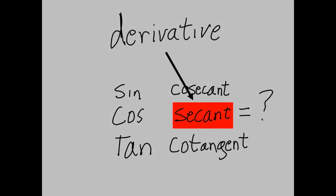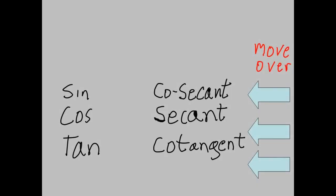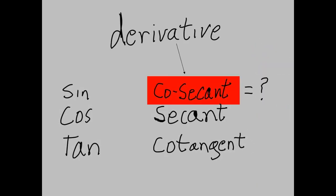The derivative of secant equals tangent times secant. The derivative of cosecant equals what?